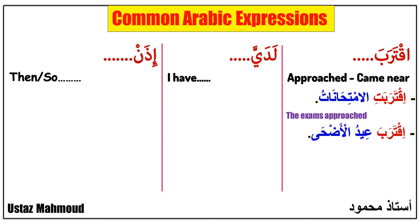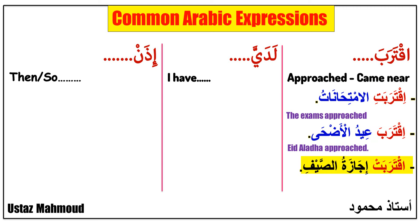Next sentence: 'Iqtaraba Eid al-Adha' — it means 'Eid al-Adha approached.' 'Eid' means feast, 'al-Adha' means sacrifice — it's our second feast, coming in less than 20 days insha'Allah. Next phrase: 'Iqtarabat Ijazat al-Sayf' — it means 'summer vacation approached.' 'Ijaza' means vacation, 'al-Sayf' means summer.